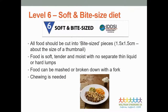Level six is a soft and bite-sized diet texture. All food should be cut into bite-sized pieces - roughly the size of your thumbnail, about 1.5 by 1.5 centimetres for adults, slightly smaller for children. Food is soft and tender with no separate thin liquid or hard lumps, can be mashed or broken down with a fork, and you definitely need to do some chewing with this.